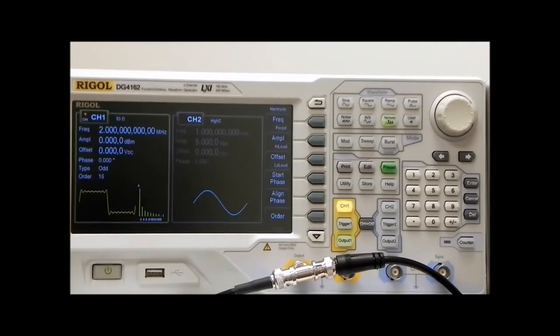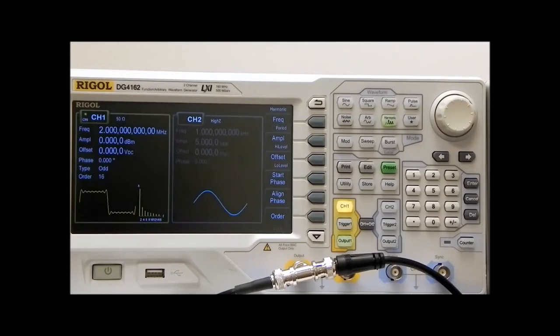You're looking at a Rigol Technologies DG4162. It's a 160 megahertz function generator with two equivalent channels. What we're going to show in this presentation or demonstration is the use of one of the features in the generator.